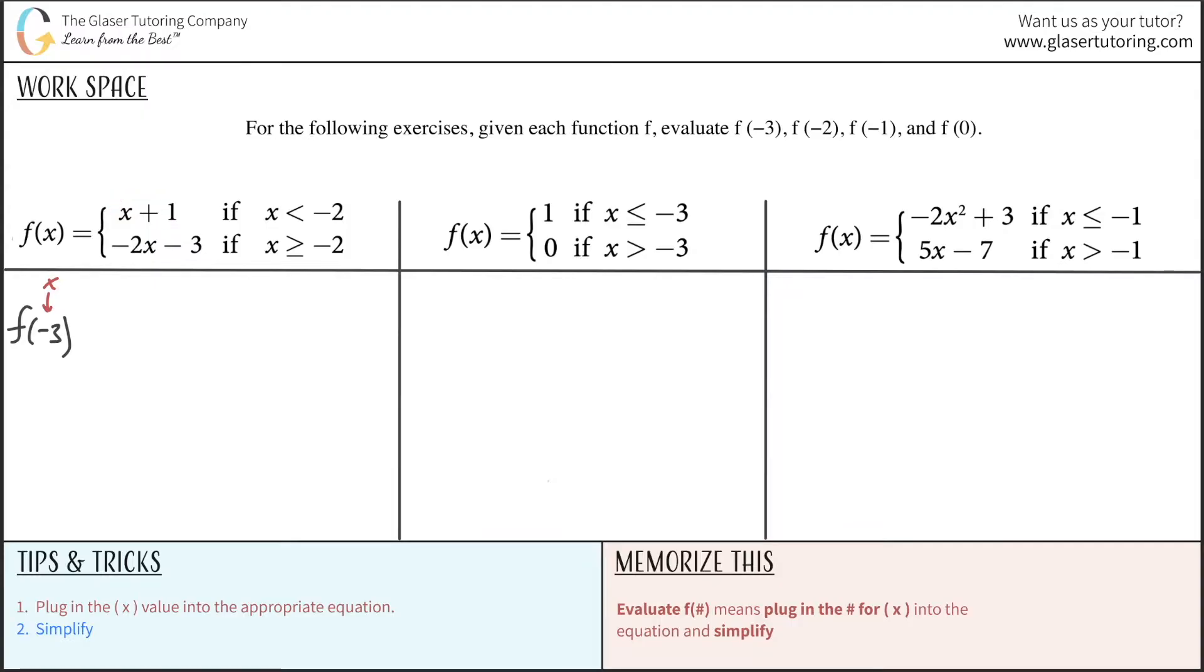You have to be aware of where negative 3 falls. Negative 3 is less than negative 2. And therefore, you have to use the first equation to find the function value of negative 3 because x lies on this continuum where it's less than negative 2. So what I'm going to do is use the first equation.